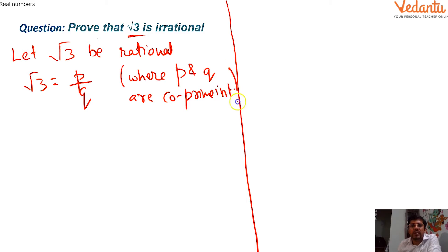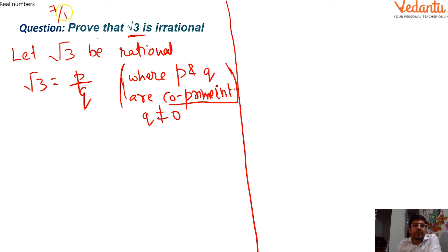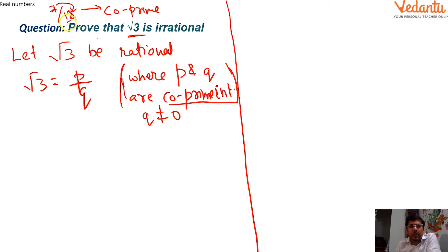Always remember to write that p and q are co-prime integers, and that q ≠ 0. Co-prime means the numbers have no common factors — for example, 7 and 18 have no common factors, so they are co-prime. Co-prime does not mean the numbers must themselves be prime; they just must not share a common factor. With p/q being co-prime and rational, the first step is squaring both sides.